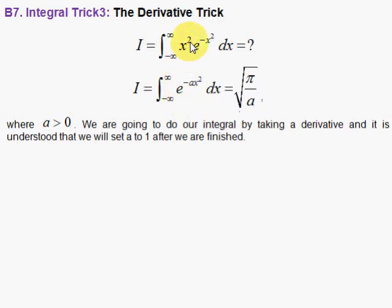And to do this top integral, we're going to take a derivative of the bottom integral with respect to a. You might say, wait a minute, a is a constant. You can't do that. Well, we're going to pretend that a is not a constant for the moment. Take the derivative, because if we do that, the derivative with respect to a pulls down a minus x squared, and the minus sign here makes it a plus x squared.